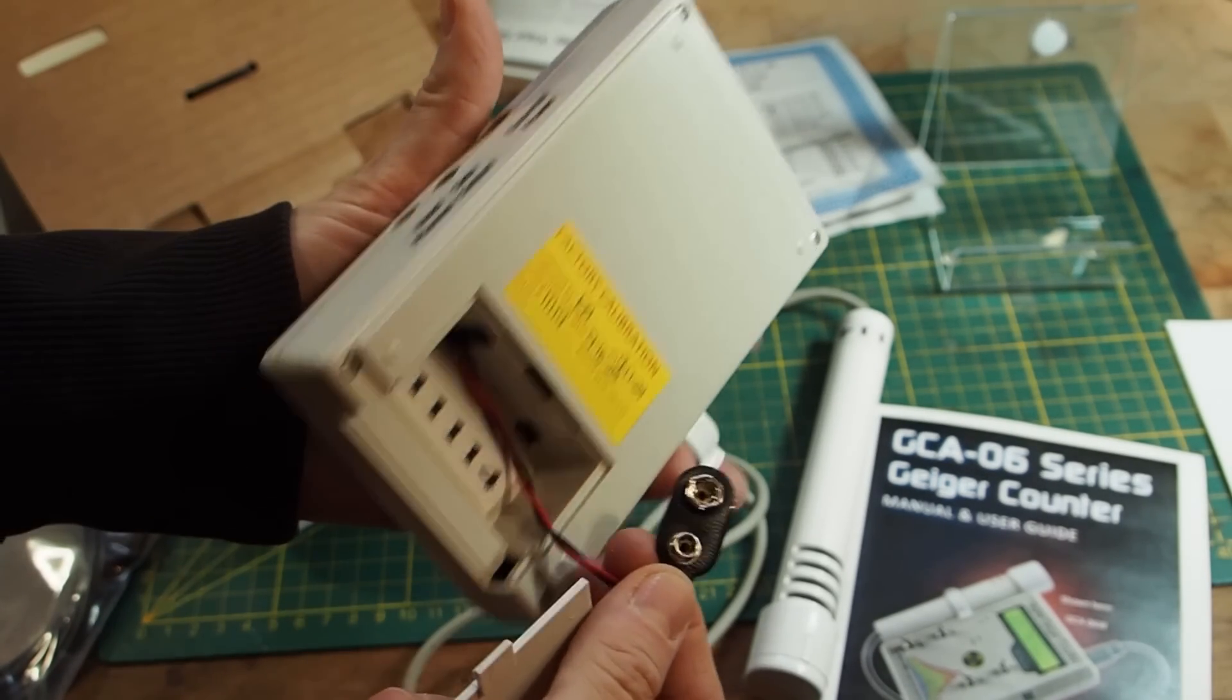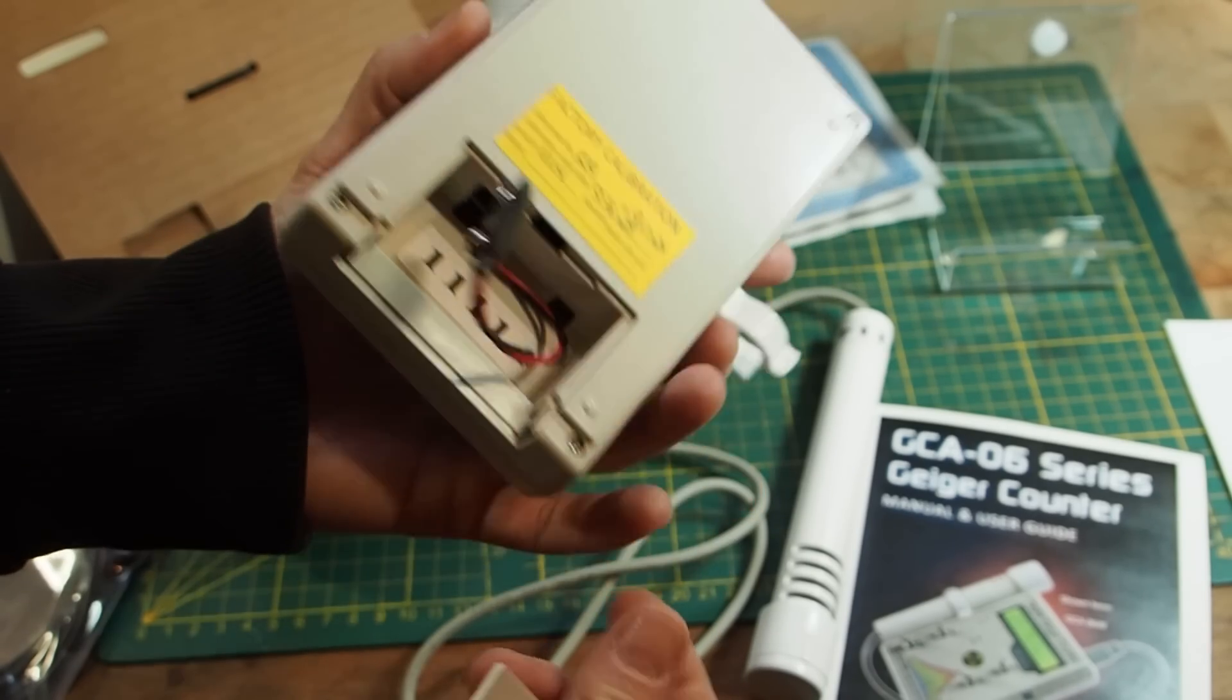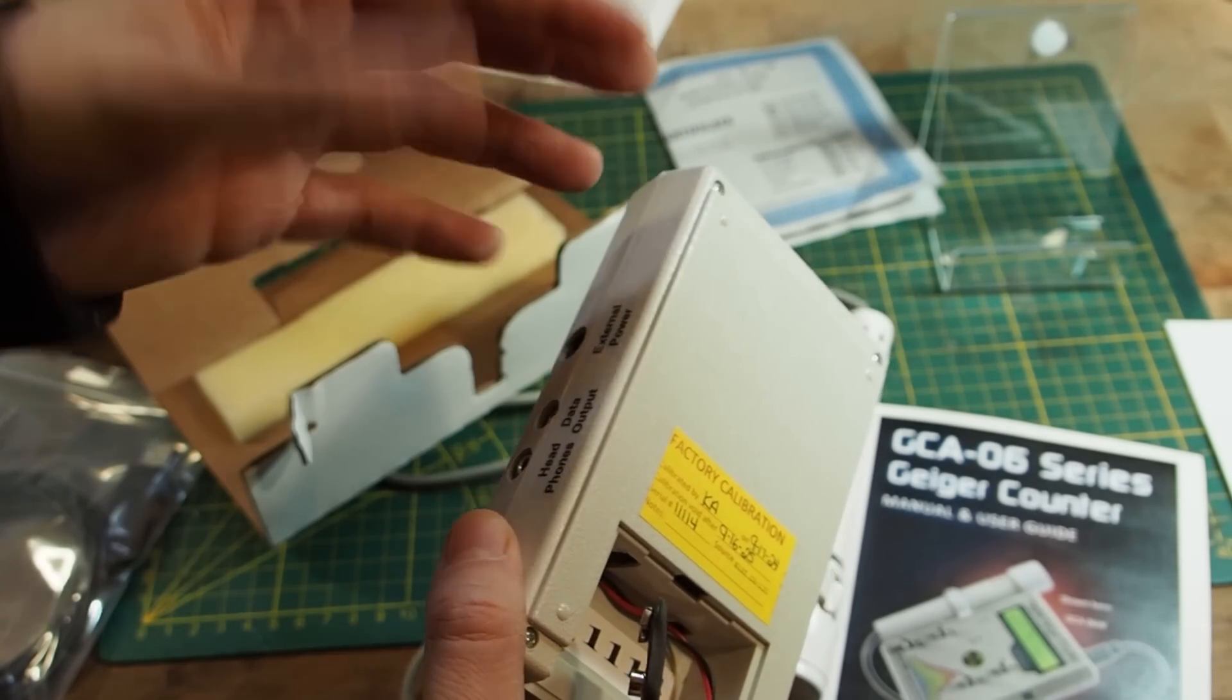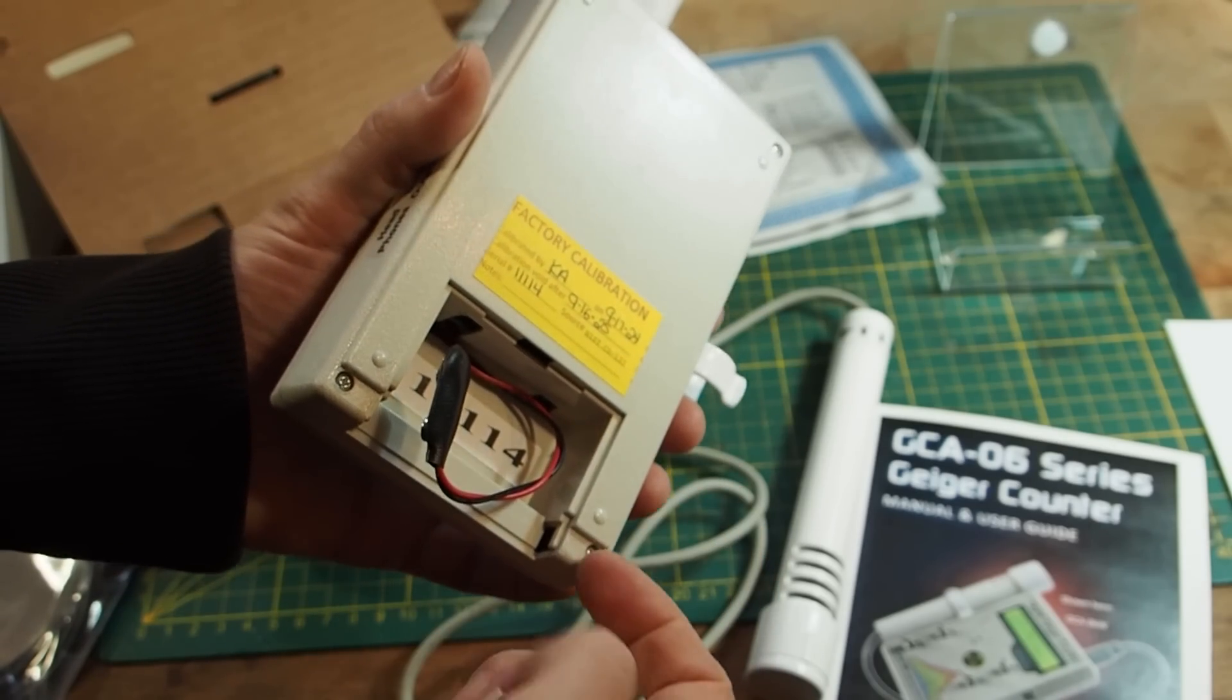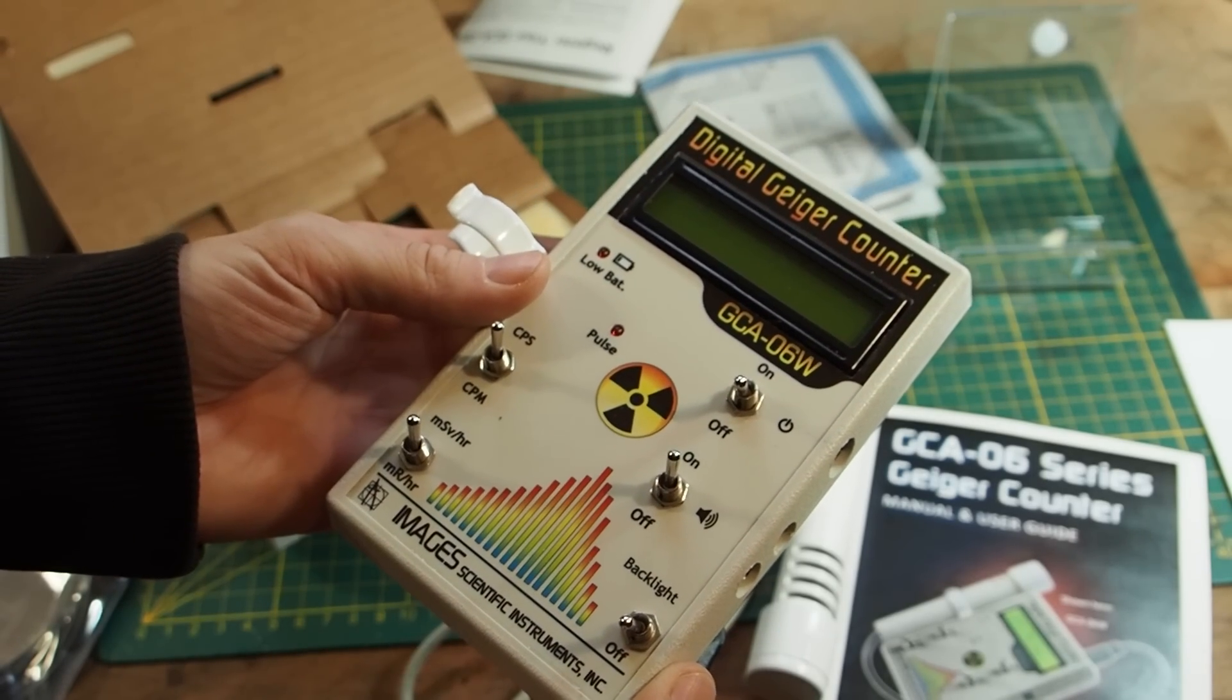So what I really like about this Geiger counter is that you can use a 9 volt battery. So other Geiger counters have a battery at the inside which is not accessible and that I really don't like. So I really like that they are using standard batteries.